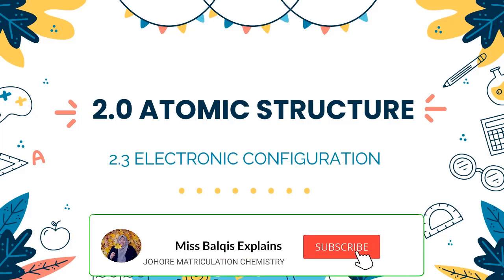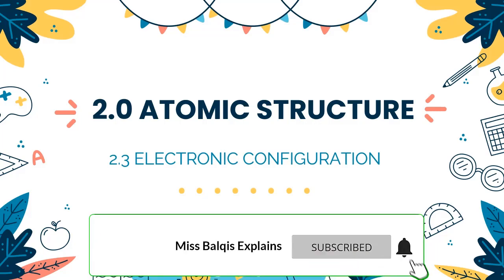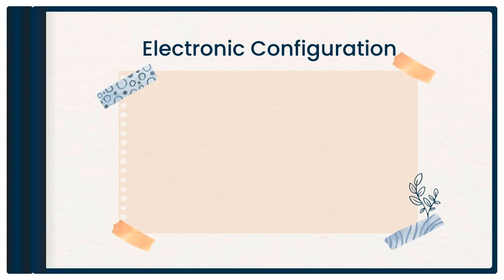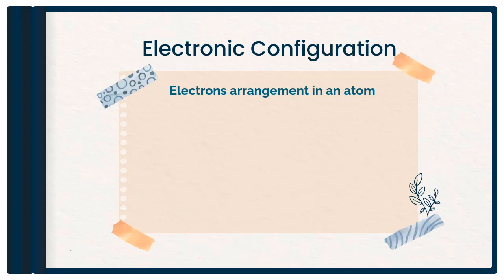Assalamualaikum warahmatullahi wabarakatuh and hello everyone. In this video, we're going to learn about a new topic in Chapter 2 Atomic Structure called Electronic Configurations. We now have to understand how the locations of an electron can be assigned. We will use the knowledge on quantum numbers we have learned in section 2.2 to determine the electron's arrangement in an atom, which we call electronic configurations.